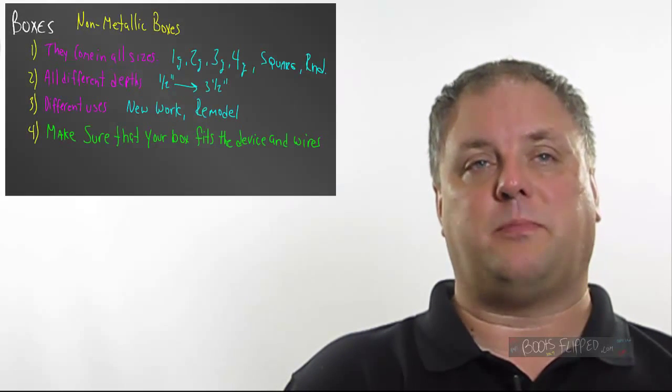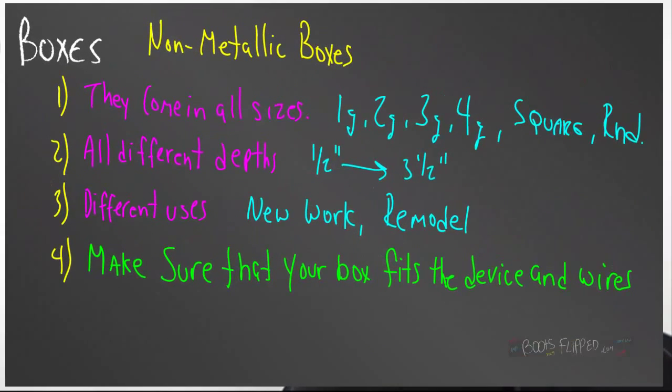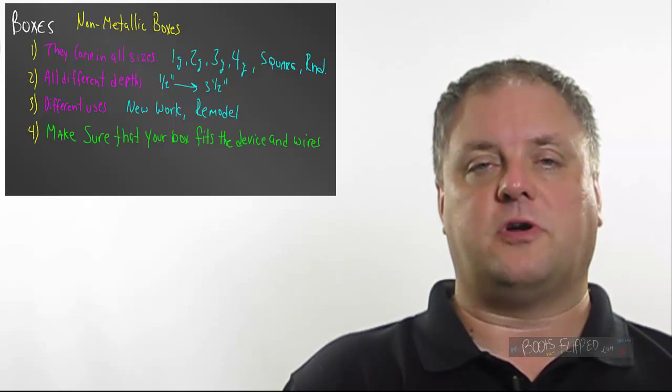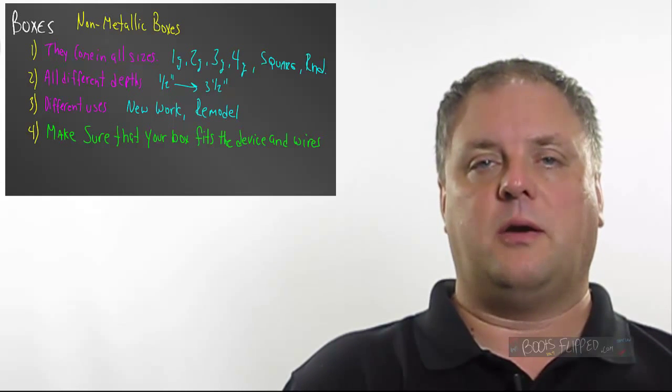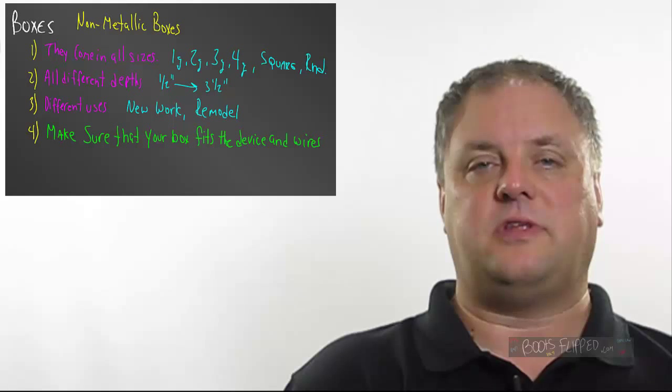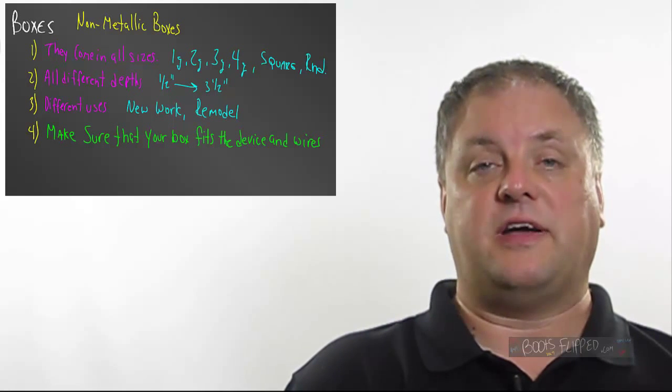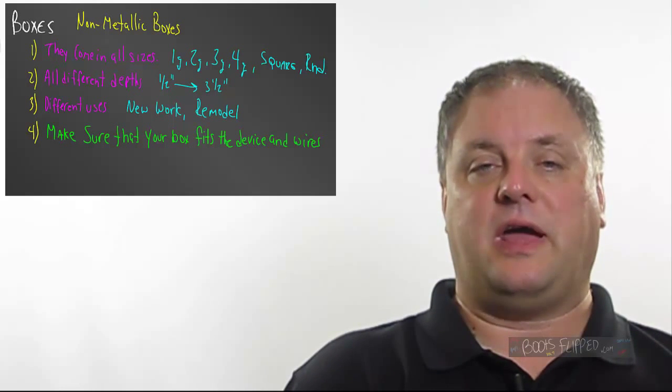With non-metallic boxes, you'll see that they come in all sorts of sizes, from 1-gangs to 2-gangs to 3-gangs to 4-gangs. They have square boxes and round boxes. The square boxes we would use just like a 4-square like you'd use on a commercial job. There'd be some sort of device ring, a 1-gang or a 2-gang. And we use them where there's not very much depth of space. But with all of our other boxes, we use them just as we need them. If we need 2 devices, we'd use a 2-gang. If we need 3 devices, we use a 3-gang.